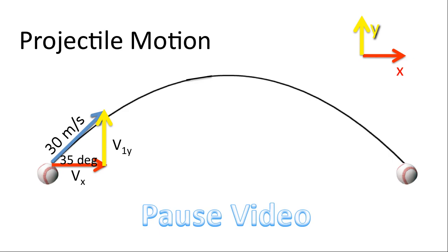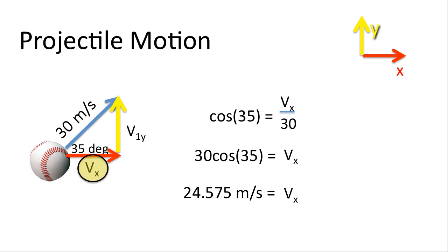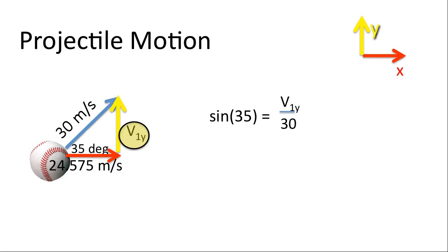All right. Pause the video right now. Please use some trigonometry to solve for vx and v1y. Hopefully, you've tried this already. To get vx, we're going to use the cosine ratio, being adjacent over hypotenuse. Cosine 35 degrees is vx, which is the adjacent, over 30 meters per second, which is the hypotenuse. Cross multiplying, we end up with this value for vx. And there it is. For the y component of the vector, v1y, we're going to use the sine ratio. Sine 35 degrees is opposite over hypotenuse, v1y over 30. Cross multiplying, and there is v1y. And there it is labeled.